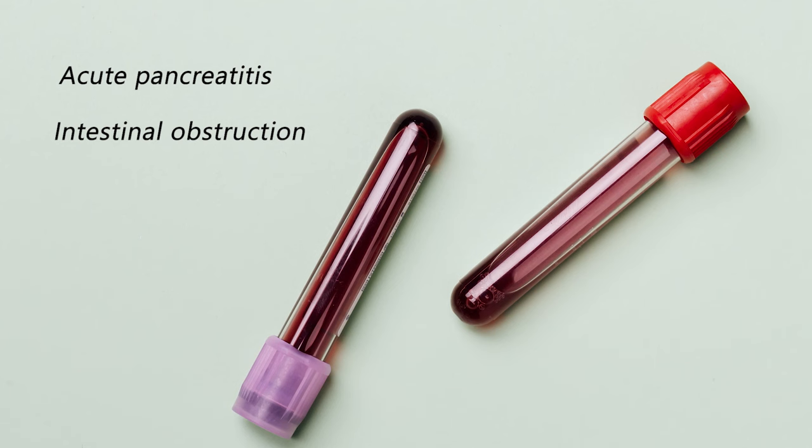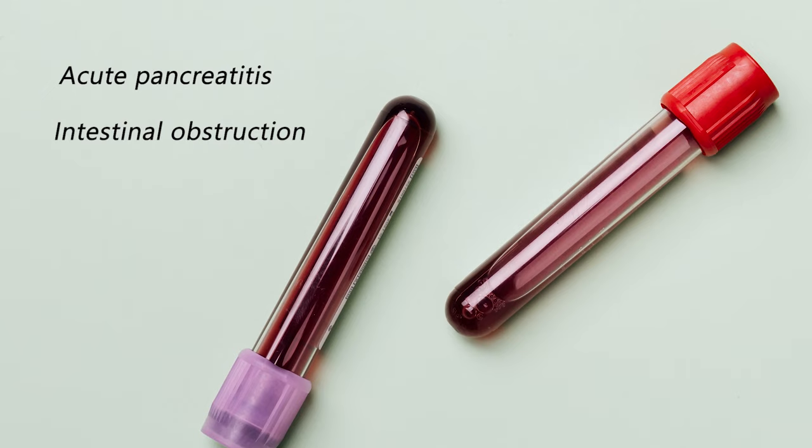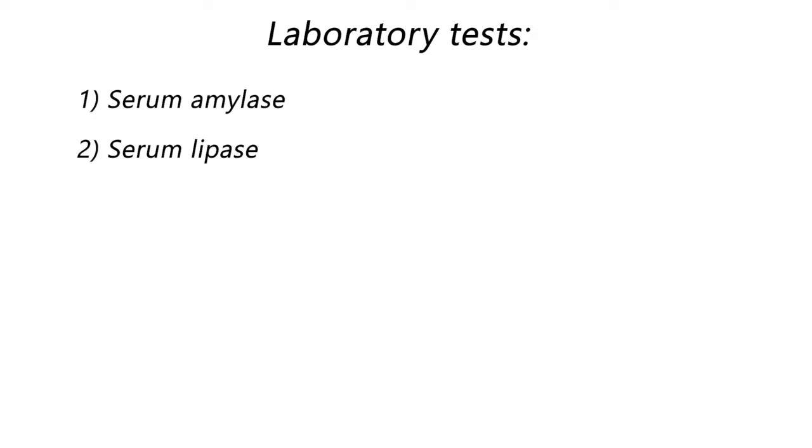Now it is time to order laboratory tests based on the most likely diagnosis in the list. In case of acute symptoms, we should order those tests which enable us to find a cause within a short period of time. Acute pancreatitis and intestinal obstruction have acute manifestations, so it is better to order laboratory tests or imaging methods to assess these two disorders first. Serum amylase and serum lipase have high sensitivity for acute pancreatitis.